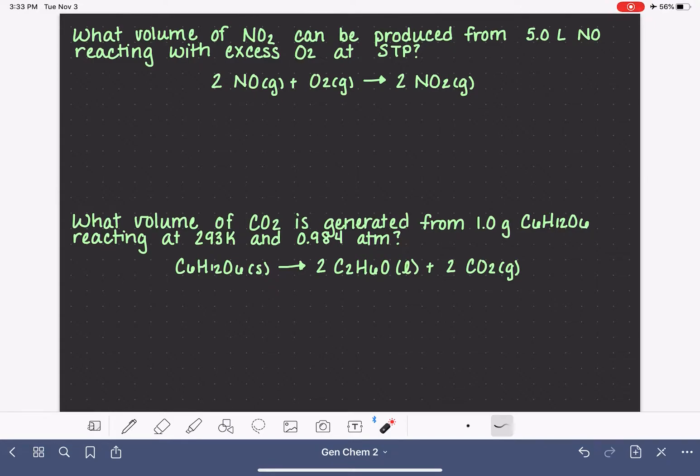So this first problem, we're looking at reacting two NO gas molecules with an O2 gas molecule to produce two NO2 molecules, and it's asking us to calculate what volume of NO2 can be produced if we're starting with 5 liters of NO and reacting it with excess O2. One of the big hints in this problem is that it says that we are at STP.